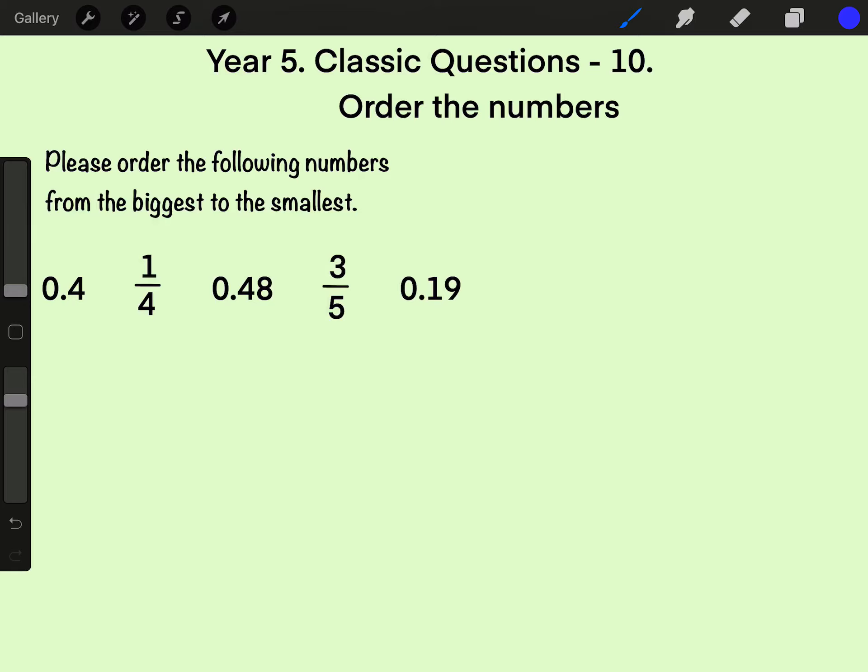Please order the following numbers from the biggest to the smallest. Below we have a group of mixed numbers including decimals and fractions. First step, convert fractions to decimals. Why? Because a group of decimals are clearer and easier for us to compare.